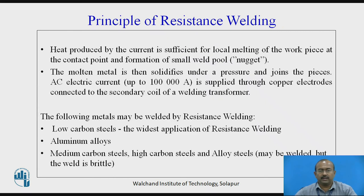The heat produced by the current is sufficient for local melting of the workpiece at the contact point and formation of a small weld pool called a nugget. The molten metal is then solidified under pressure. AC electric current of up to 1 lakh amperes is supplied through the copper electrode connected to the secondary coil of the welding transformer. Metals that may be welded by resistance welding include low carbon steel, aluminum alloys, medium carbon steel, high carbon steel, and some other alloy steels.